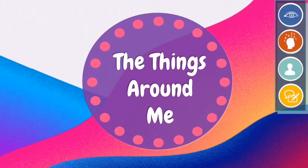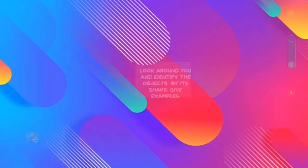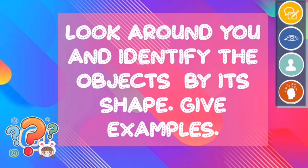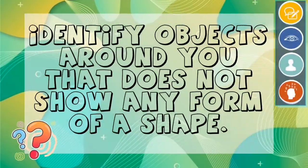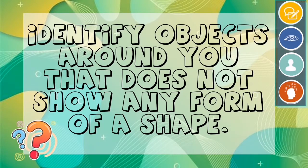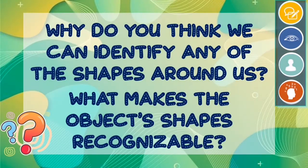Hello everyone! Let's talk about the things around us. First, look around you and identify the objects by its shape. Can you give examples? This time, identify objects around you that does not show any form of a shape. How was it? Why do you think we can identify any of the shapes around us? What makes the object shapes recognizable?